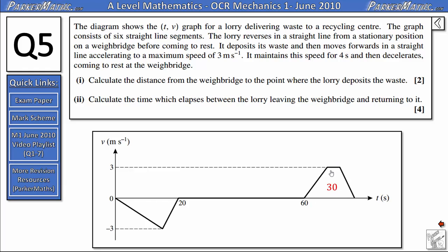And from here, we can just think about the area of a trapezium. If we know the area of the trapezium is 30, and we know the height of the trapezium is 3, in the question we're told about this part of the trapezium here, it says it maintains this speed for 4 seconds.